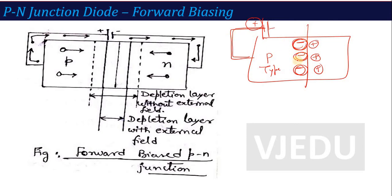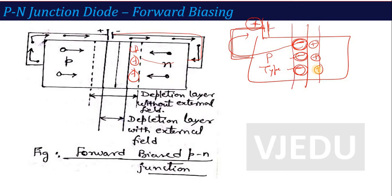For example, if there were three negative ions and you connect positive battery, one ion is attracted away — only two ions remain. Similarly, on the n-side, you connected the negative terminal, and the positive donor ions are also reduced. So the net ions at the junction decrease, meaning the junction potential is reduced and the depletion layer width is reduced when we apply forward bias.